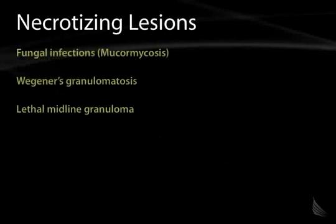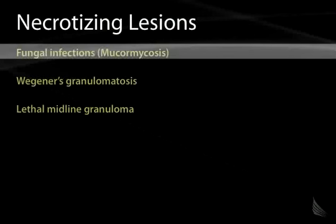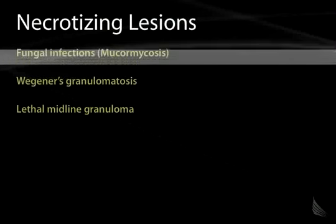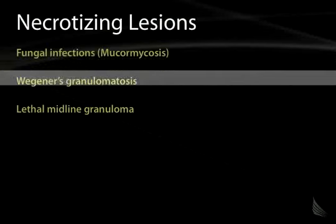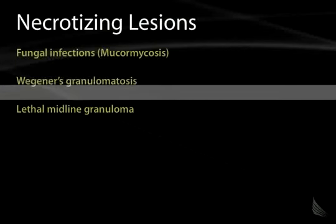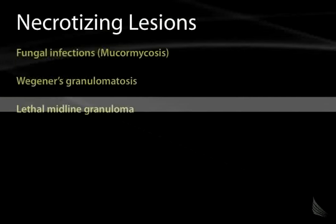Necrotizing lesions of the nose and upper airways include mucormycosis, seen in diabetics, Wegener's granulomatosis, and the lethal midline granuloma. The latter is actually a form of lymphoma that used to be universally fatal, but with its recognition as a lymphoma, can now be very successfully treated with various forms of chemotherapy.